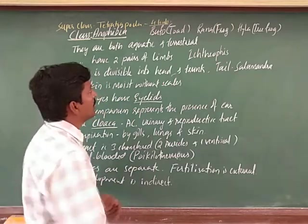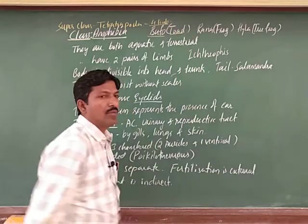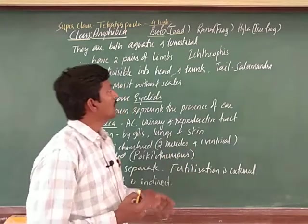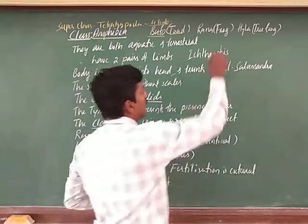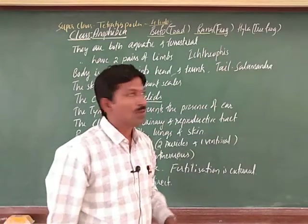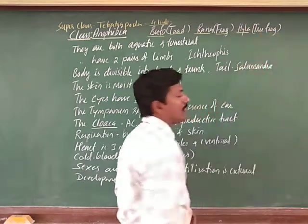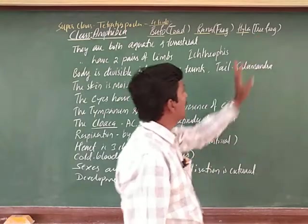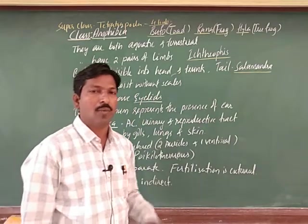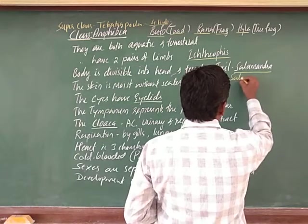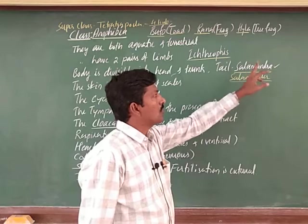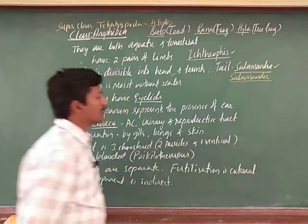There are two different types of frogs. Buffo are called toads — they are the large-sized ones. Medium-sized ones are Rana, referred to as frogs in general. Frogs present on trees are referred to as Hyla, sometimes green in colour, called tree frogs. Another example is Ichthyophis, and there is also Salamander — also called Salamandra — both names are correct.